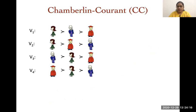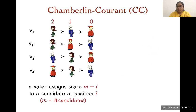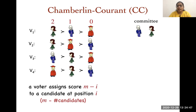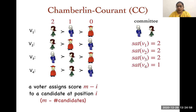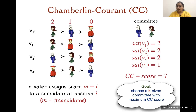Next, we consider the CC committee. Again, we have a preference ranking over the candidates, and every voter assigns score M minus I to a candidate at position I. The satisfaction of a voter is the Boda score of their top preferred candidate in the committee. For voter V1, the green candidate is preferred more than the blue candidate, so the satisfaction of V1 is 2. Similarly, we compute the satisfaction of all voters. The CC score is the total satisfaction of all voters, and the goal is to choose a K-sized committee with maximum CC score.